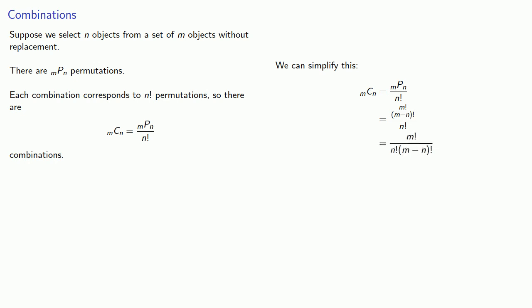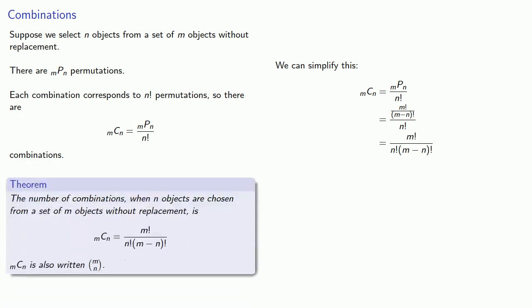And so we arrive at the result: the number of combinations when n objects are chosen from a set of m objects without replacement is given by the formula m factorial over n factorial times m minus n factorial.